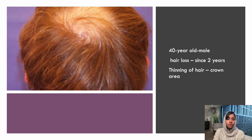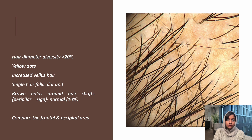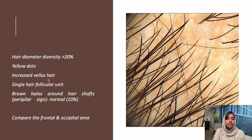The next clinical scenario: a 40-year-old male comes with hair loss for two years and complaints of thinning in the crown area. On trichoscopy, there is a variation in hair diameter of more than 20%, indicating a pathological condition. There are a lot of vellus hairs and the number of hairs per follicle is very less — like one. These features of hair diameter diversity more than 20%, yellow dots, increased vellus hairs, and single-hair follicular units indicate androgenetic alopecia. Brown haloes — also called the peripylar sign — indicate lymphocytic infiltration around the hair follicles.